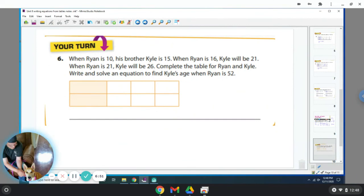Okay, so it says when Ryan is 10, his brother is 15. When Ryan's 16, Kyle's 21. When Ryan's 21, Kyle's 26. Complete the table. Okay, so I'm going to make this one Ryan. I'm going to make this Kyle. So when Ryan's 10, Kyle's 15. This is 16, 21. And then 21, 26.